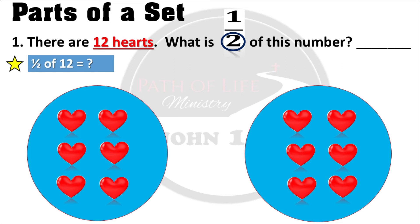Now we go to the numerator, which is the top number of the fraction. The numerator tells us how many groups we are to select. Since we are dealing with one half, we select one group. I am now going to select this group.